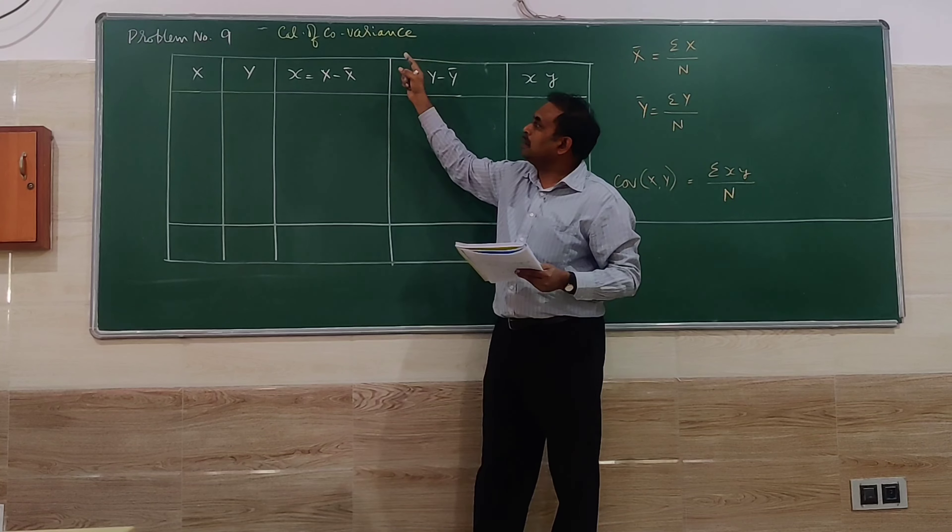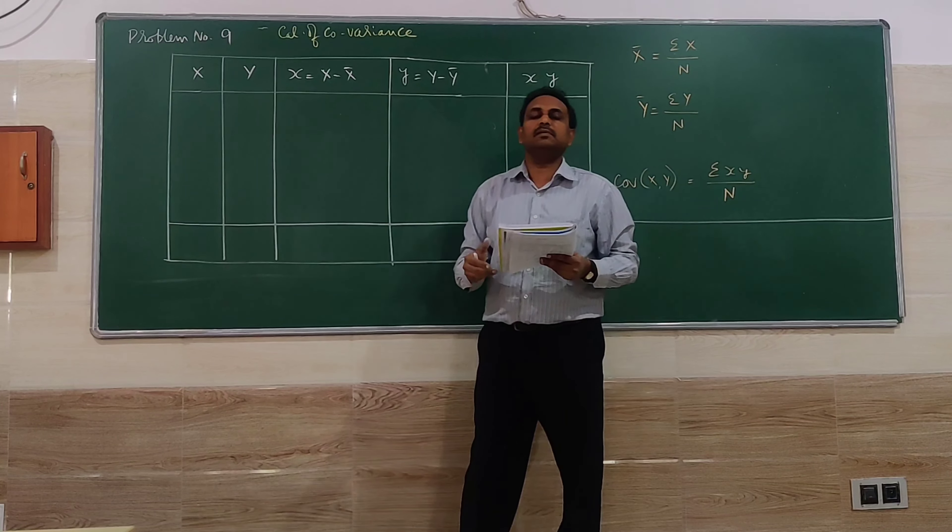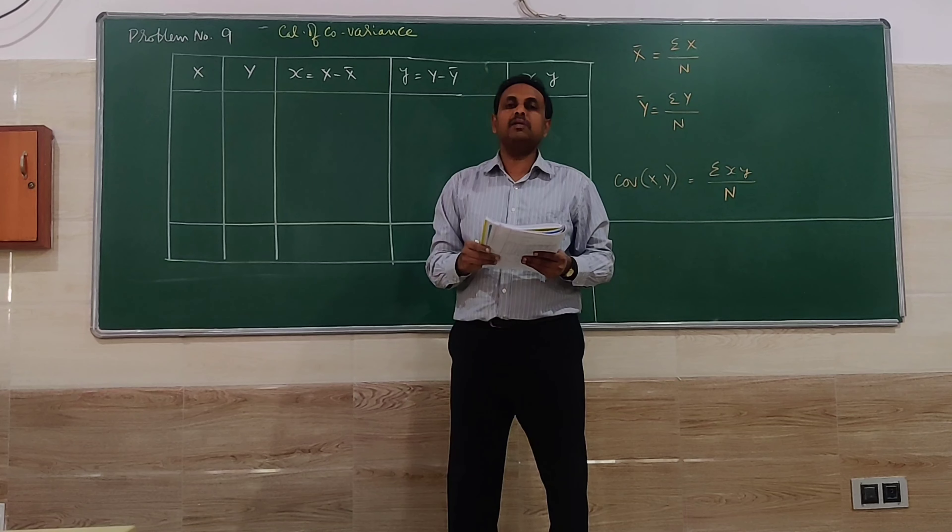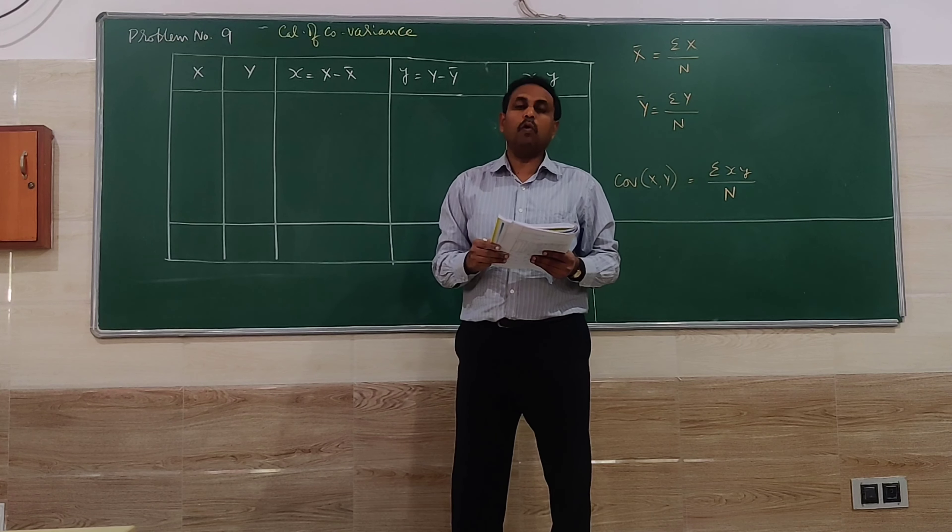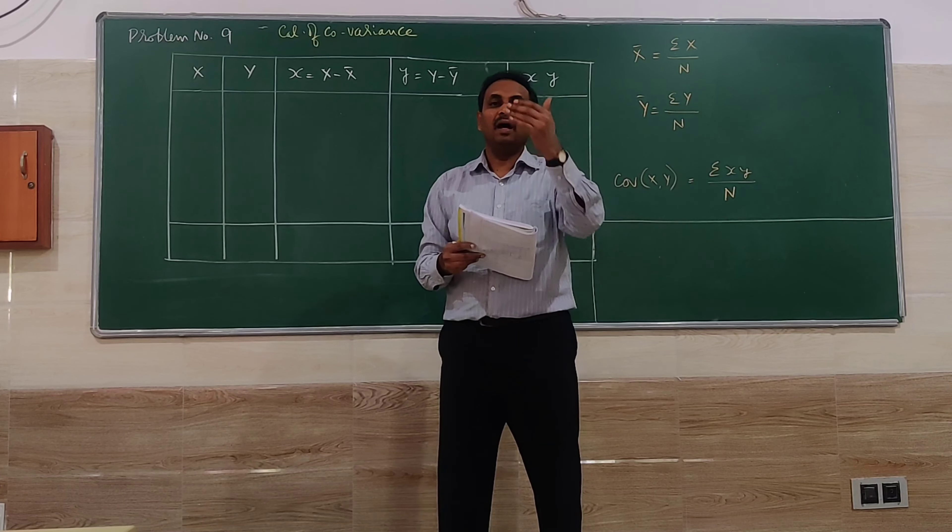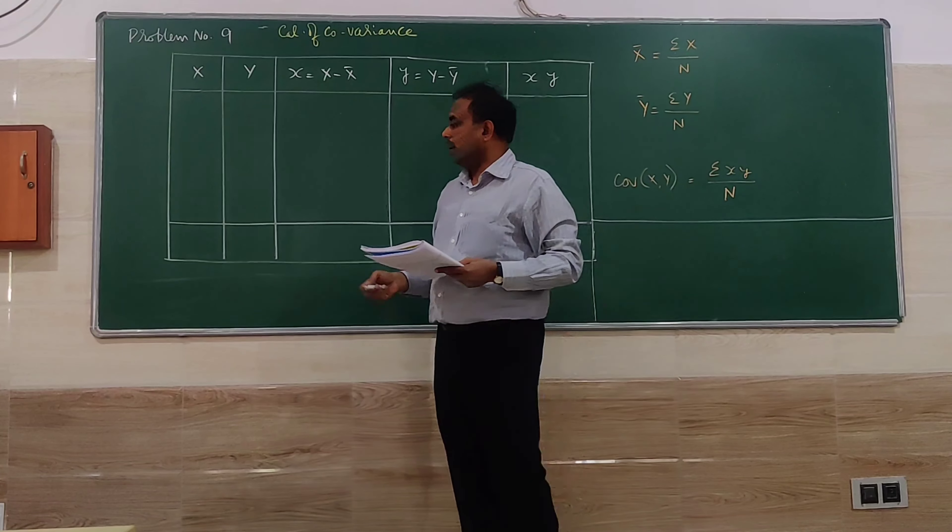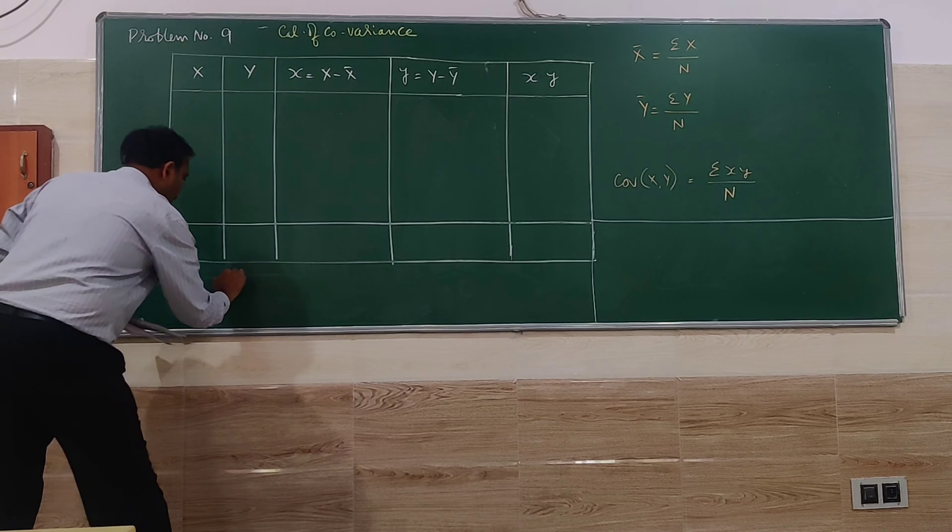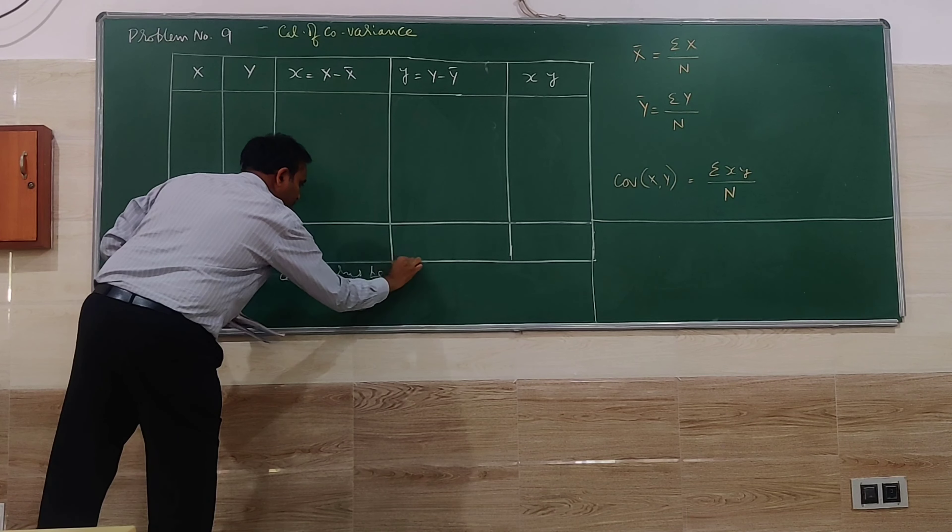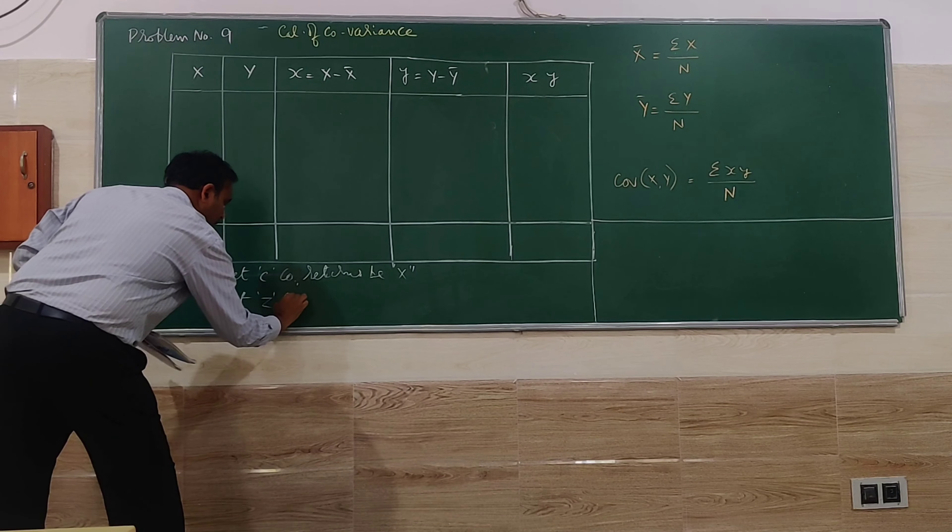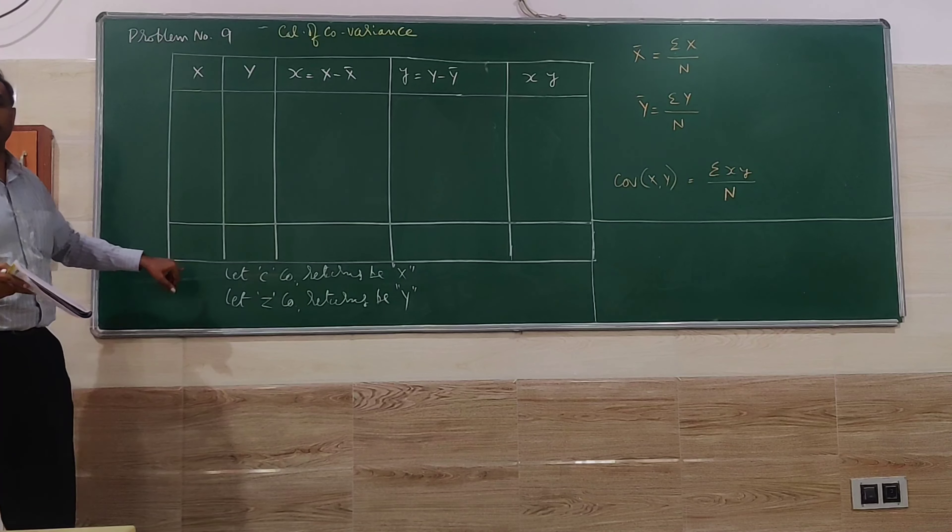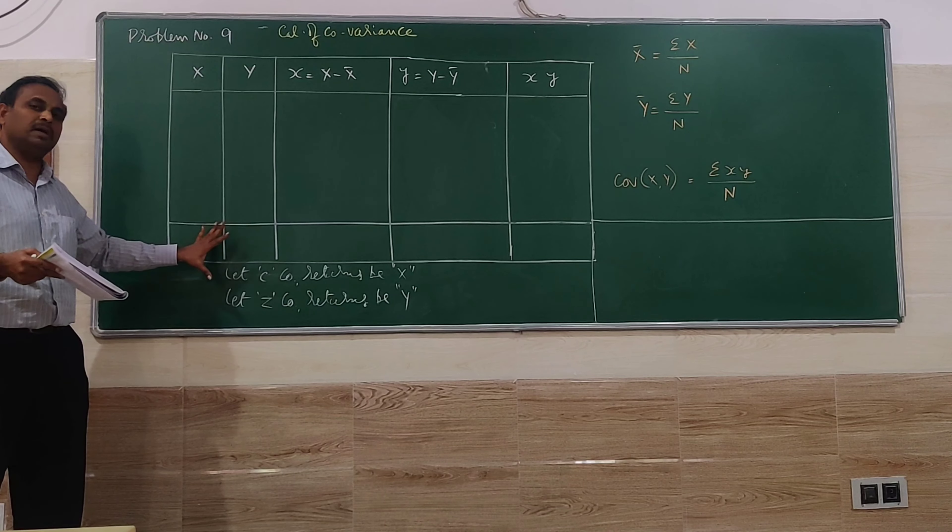Let's talk about problem number 9, which is also related to calculation of covariance. The problem goes like this: daily closing prices of two stocks arranged as per the returns, calculate covariance. Three columns are there: date one through five, C company returns, and Z company returns. That has to be converted into X and Y series. So let C company returns be X, let Z company returns be Y. This is the first thing because it is not given as X and Y here, so we have to name them as X and Y series.